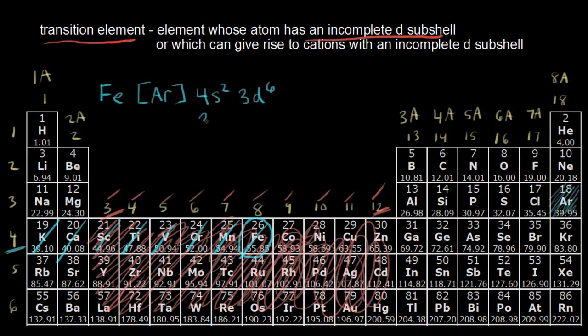And I could have written this 3d6 4s2. And right now, both are considered to be correct answers. And I won't get into a discussion about the order of filling of these orbitals in this video. So I'll save that for another video. This video is only talking about definitions and identifying elements on the periodic table. And so either one of these would be a correct electron configuration.